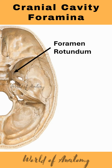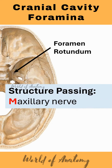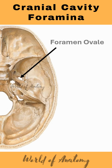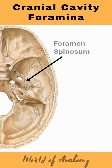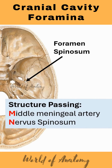Next we have the foramen rotundum — structures passing are the maxillary nerve and emissary vein. Foramen ovale — structures passing are the mandibular nerve, accessory meningeal artery, lesser petrosal nerve, and emissary vein. Foramen spinosum — structures passing are the middle meningeal artery and nervus spinosum.